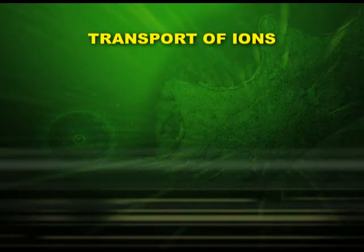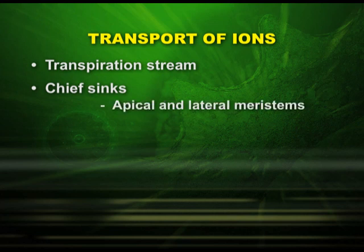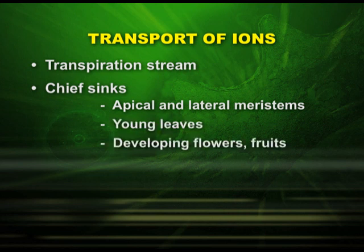After the active absorption of ions, let us see how mineral ions are translocated. The important features of translocation are: one, it takes place by the transpiration stream. Secondly, there are chief sinks in the plants — apical and lateral meristems, young leaves, and developing fruits and storage organs.